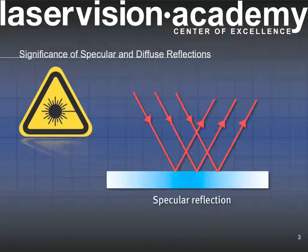Reflections that occur at mirror-like surfaces produce specular reflections. Accidental eye or skin exposure from a class 3B or 4 laser to specular reflections can be as hazardous as a direct exposure, also known as intra-beam exposure.